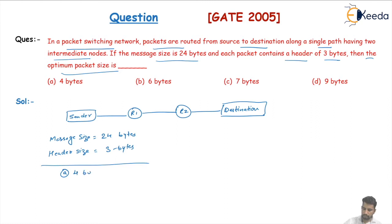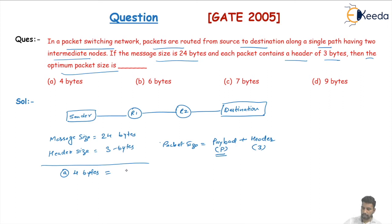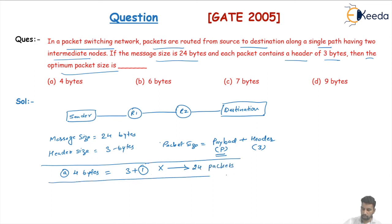Option A is given as four bytes. The total packet size includes two things: one is the payload and the second is the header. The header is fixed at three bytes, so the payload is only one byte. This is not good because we need to transmit 24 packets, which gives very high overhead.